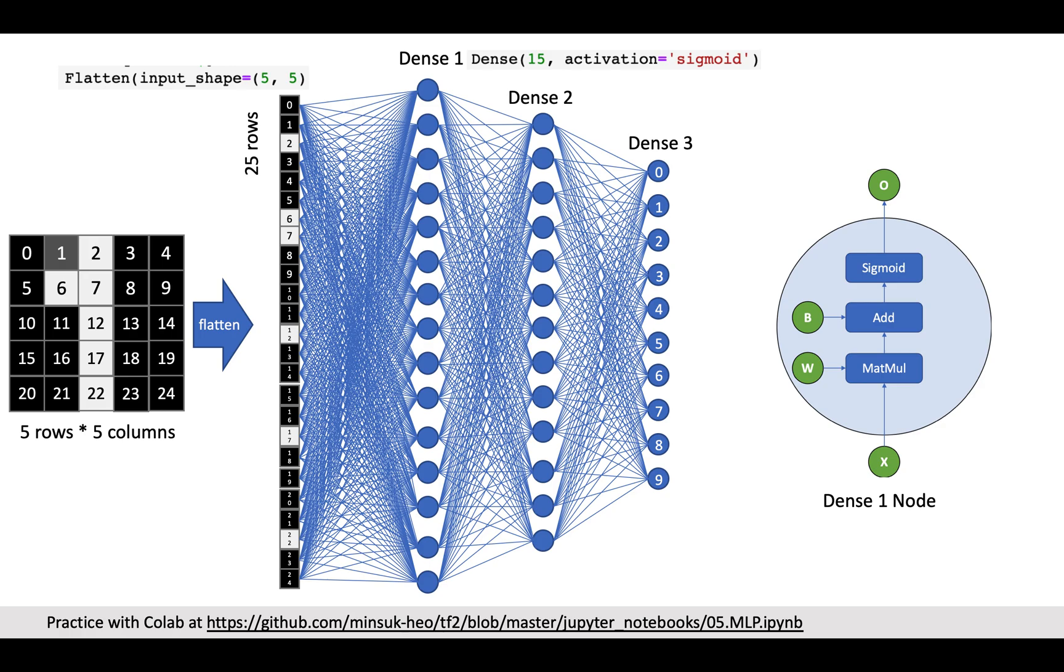And if you zoom in the nodes in this dense layer, you will see the right side node which has sigmoid activation function.